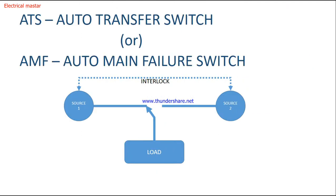ATS means Auto Transfer Switch, and it is also called Auto Main Failure switch. This ATS is used to control two sources — whenever source 1 fails, it will connect the load to source 2. Similarly, when source 1 comes back, it returns the load from source 2 back to source 1. That is the ATS panel.